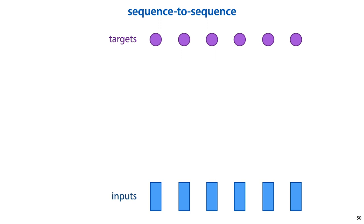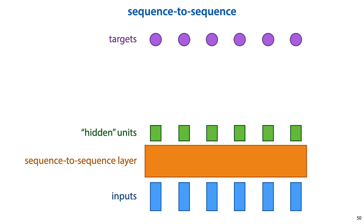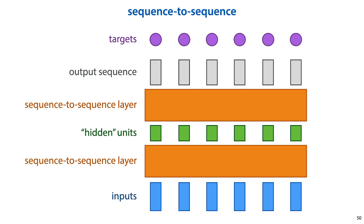A sequence-to-sequence task is probably the simplest setup. Both our input and our targets consist of sequences. In this case, we can simply create a model by stacking a number of sequence-to-sequence layers, giving us intermediate sequences, and computing our loss as the difference between the output sequence and the target sequence. We sum the loss over all tokens in the sequence and back-propagate.